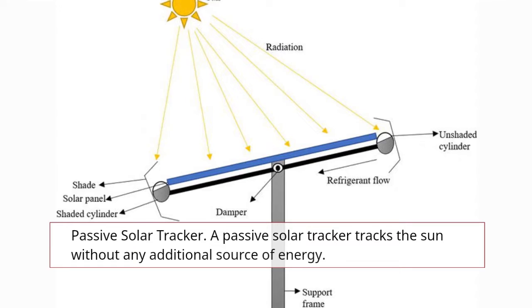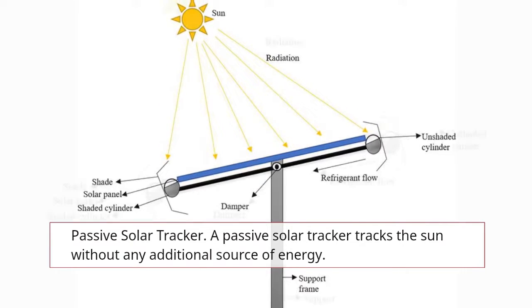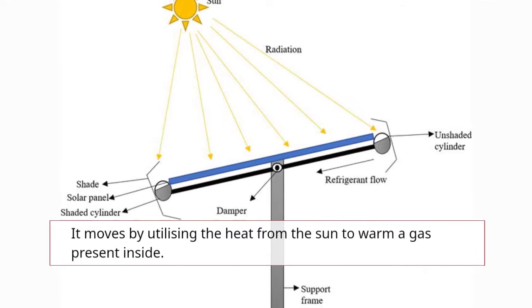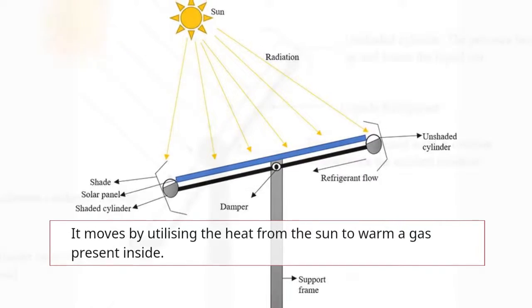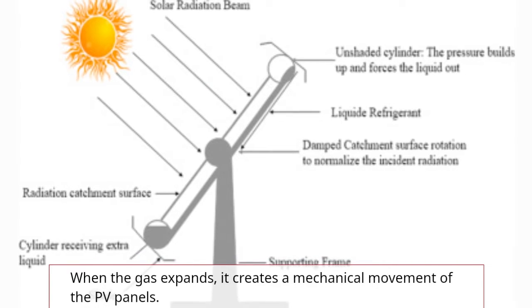Passive solar tracker: A passive solar tracker tracks the sun without any additional source of energy. It moves by utilizing the heat from the sun to warm a gas present inside. When the gas expands, it creates a mechanical movement of the PV panels.